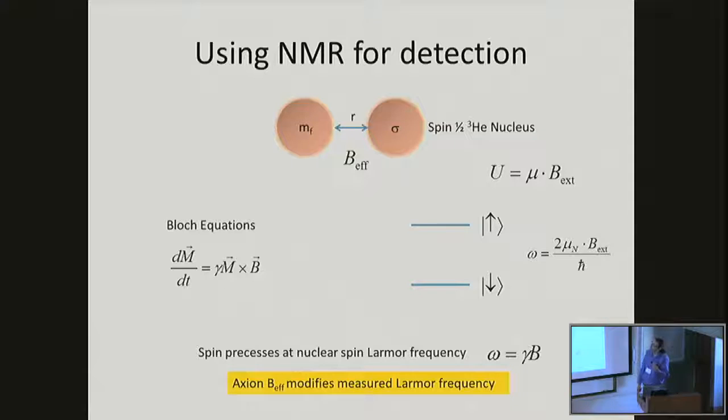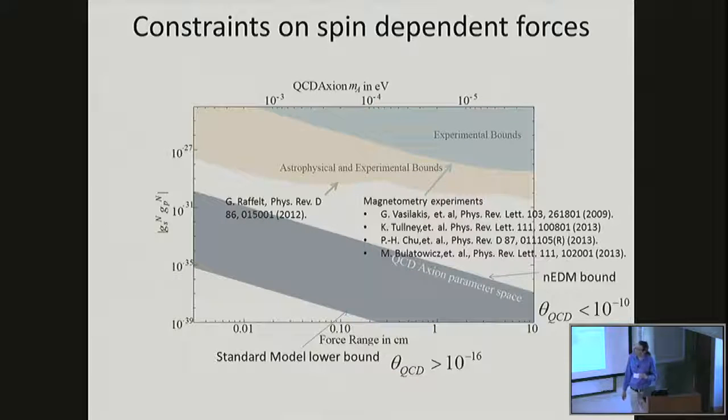There have been some experiments somewhat along these lines in the past, where one attempts to use NMR to detect these kind of effects. If I have some fermion that I bring by a nucleus, for example take a spin one-half helium-3 nucleus in a magnetic field, I get some energy splitting between spin up and spin down. The nuclear spin will precess at the nuclear spin Larmor frequency. If I bring this mass nearby and change the effective magnetic field because of this fictitious magnetic field, then the Larmor frequency actually would get modified as a result of this proximity of this mass. There are some constraints from precision magnetometry on these spin-dependent forces. This is a graph showing the product of the coupling constants of that equation I had in the previous slide, versus either the force range or equivalently the mass of the axion in eV. These precision magnetometry experiments have bounded this shaded light blue area here.